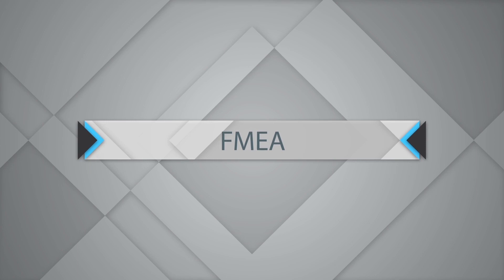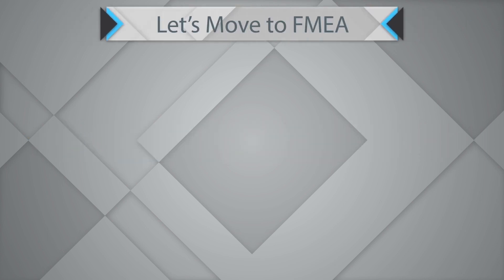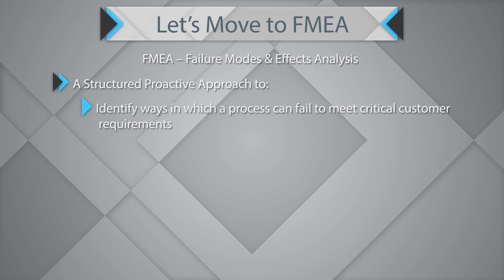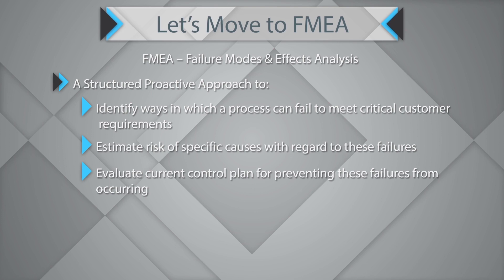One very important tool used within and outside Six Sigma projects is FMEA, or Failure Mode and Effect Analysis. FMEA is a structured, proactive approach to identify ways in which a process can fail to meet the critical customer requirements, estimate risk of specific causes with regard to these failures, and evaluate the current control plan for preventing these failures from occurring and prioritize actions that should be taken to improve the process.